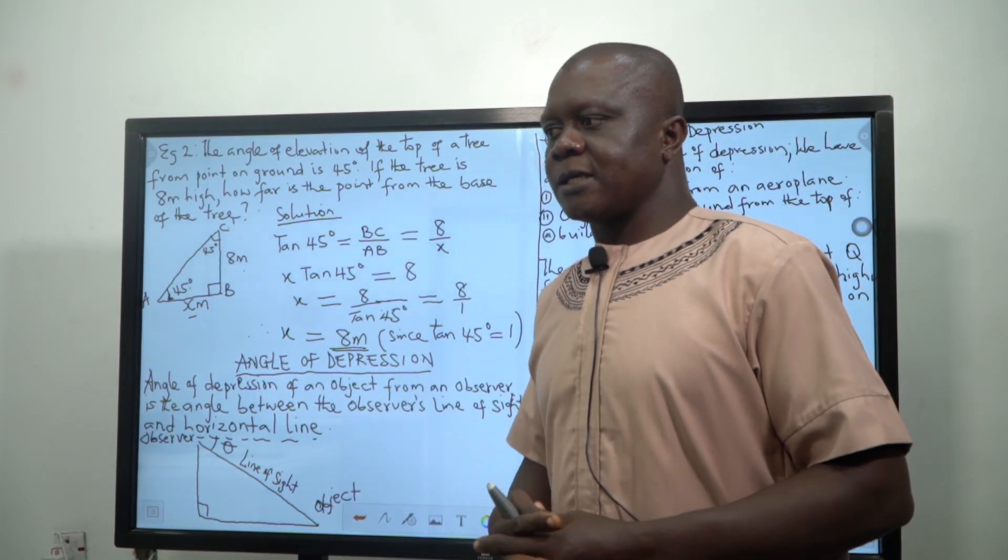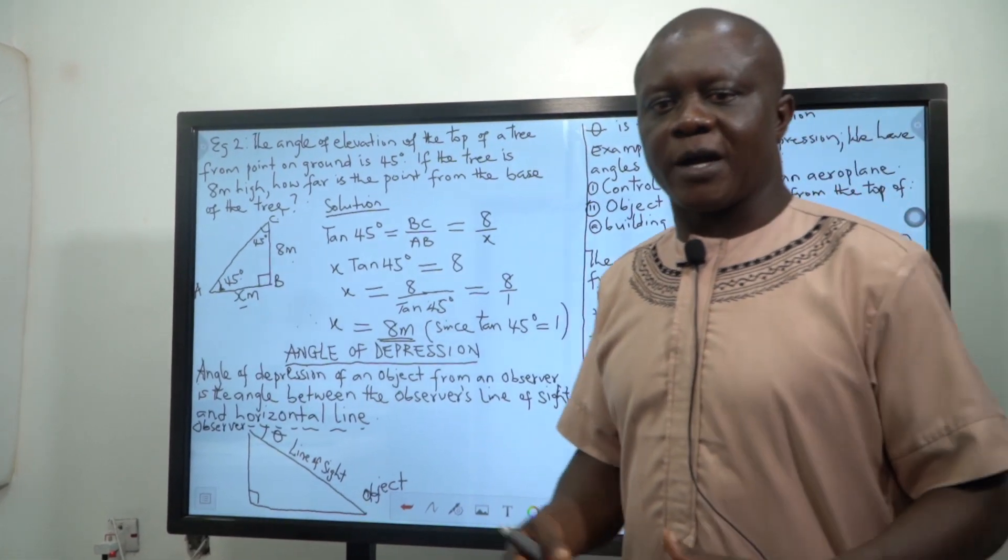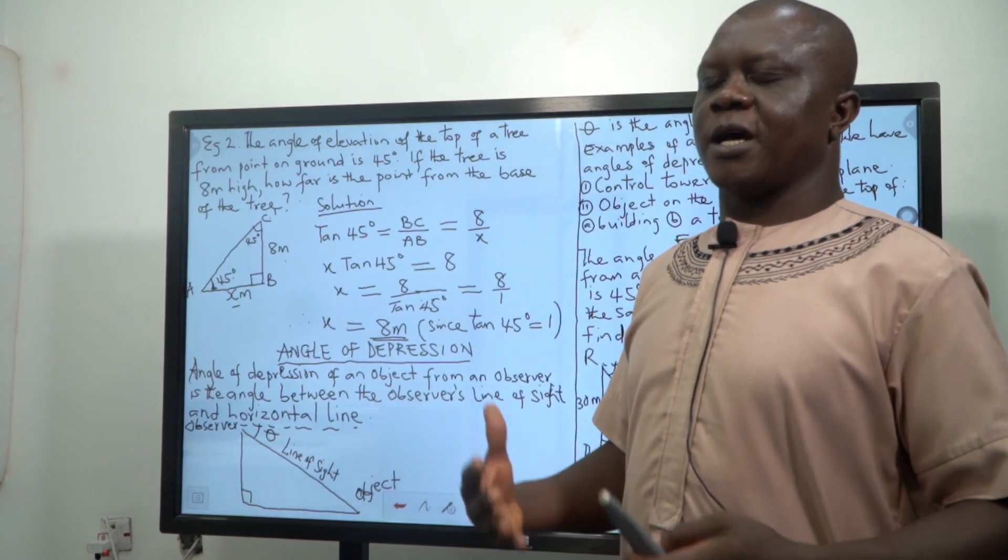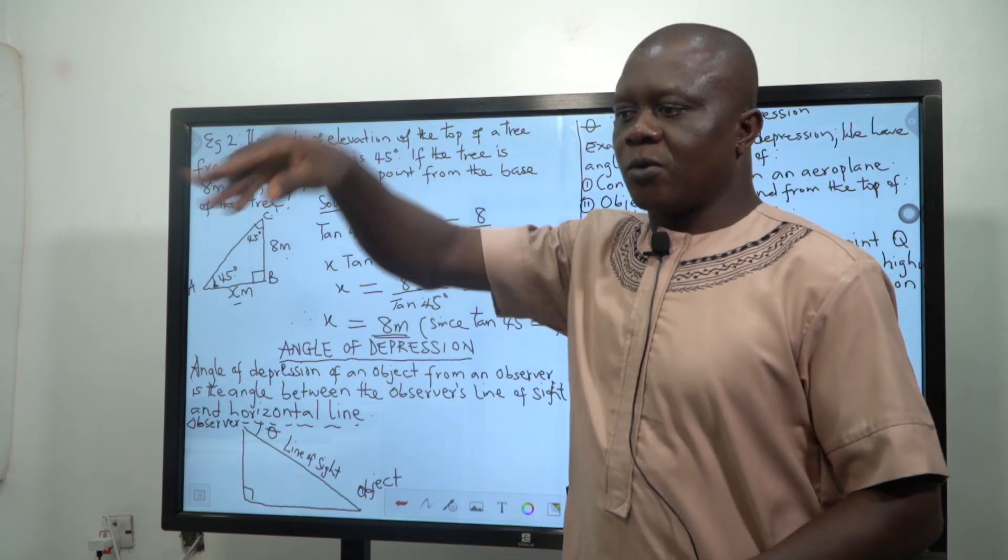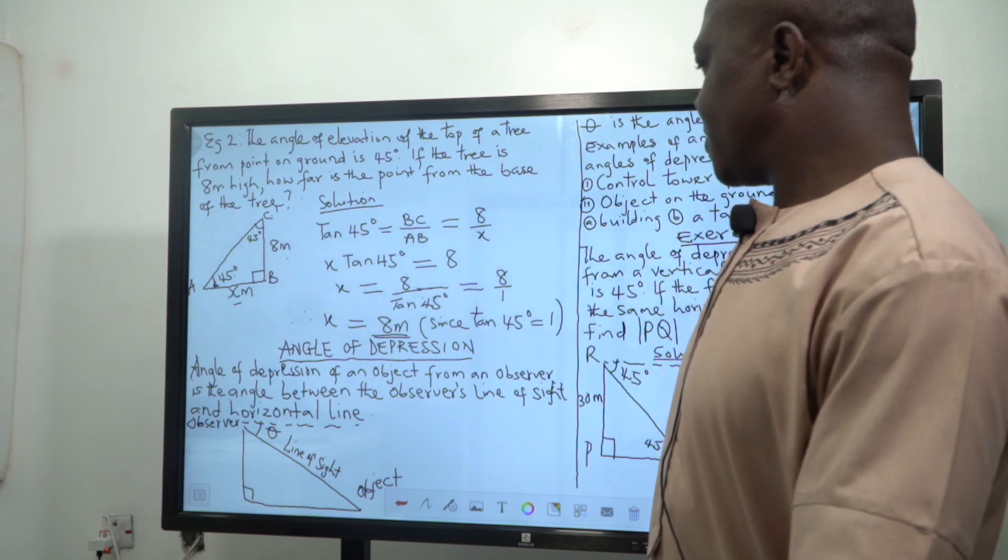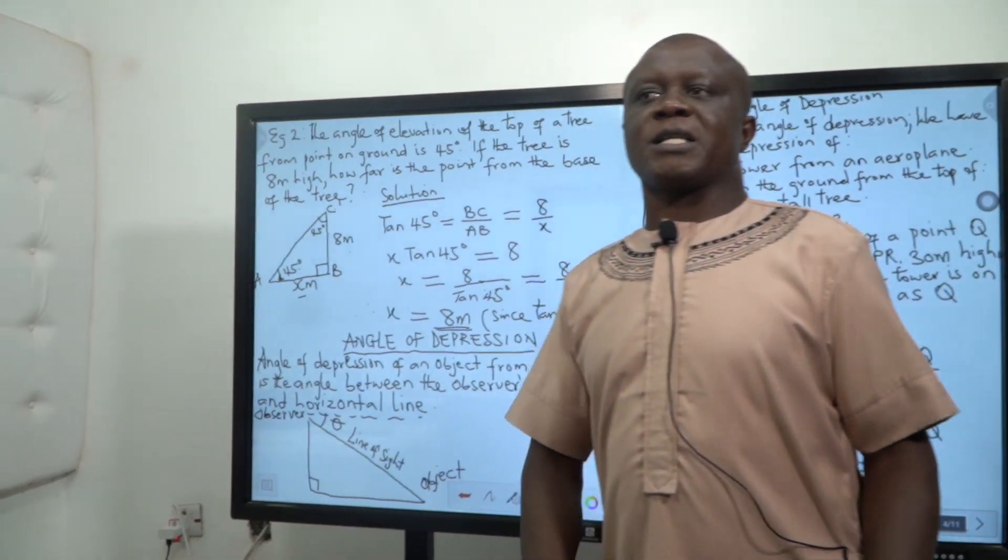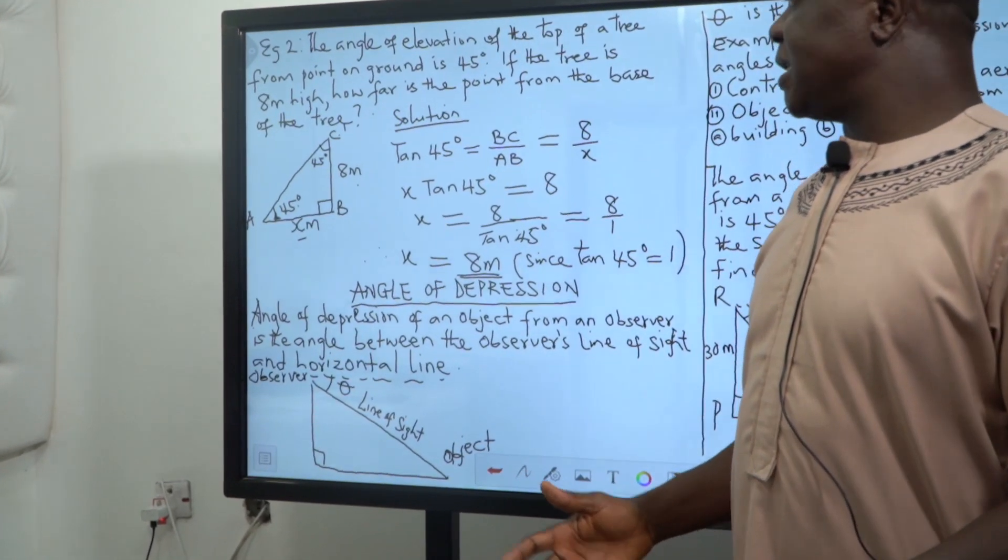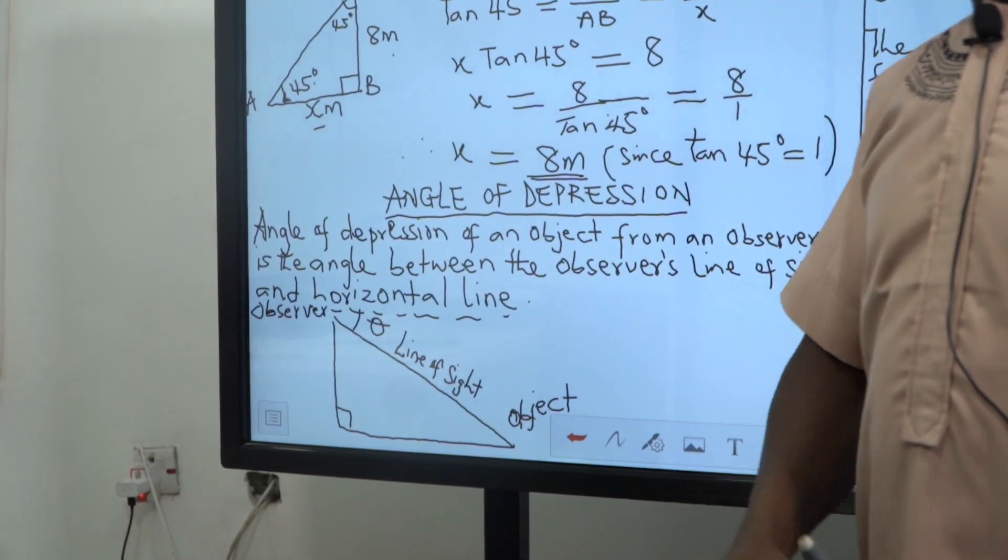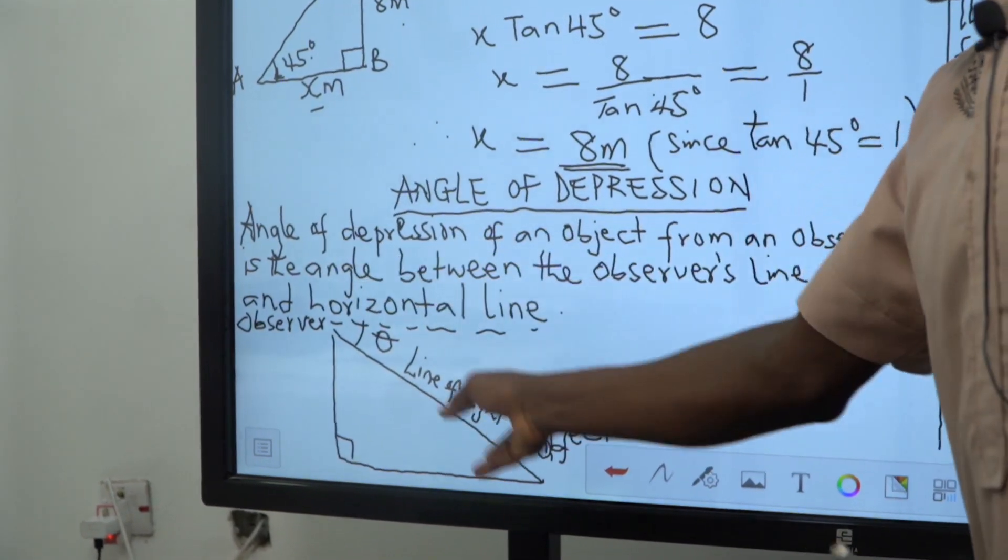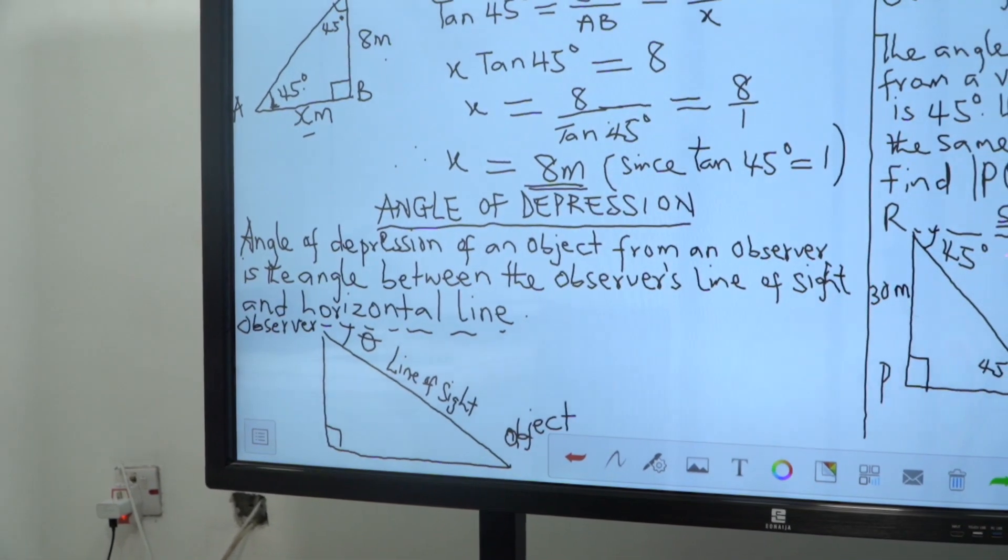Then the next subtopic we want to look at is angle of depression. Angle of depression is opposite of angle of elevation. That is when an observer is at the top of a tree or top of a mountain, trying to find something at the level ground. You can see now that the observer has changed his position. He is now on the top of a mountain or on top of a cliff or on top of a tree, trying to find something at the level ground.